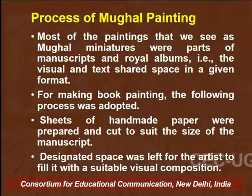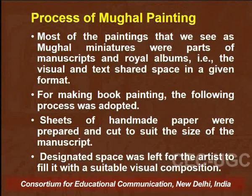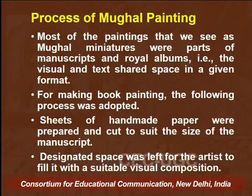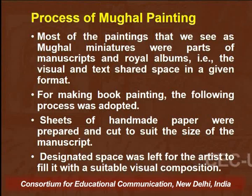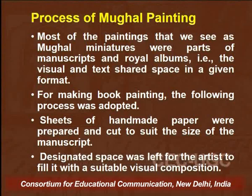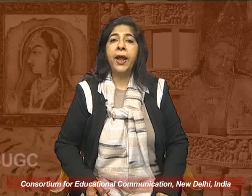If we talk about the process of Mughal painting, most of the paintings we have seen were parts of manuscripts or royal albums — they constituted the visual and text shared in a given format. For making book paintings, specific processes were adopted. Sheets of handmade paper were prepared and cut to match the size of the manuscript. Then designated space was left for the artist to fill with a suitable visual composition, and it was decided beforehand which themes needed a visual, so a blank page was left for that. The pages were then ruled and filled with text.